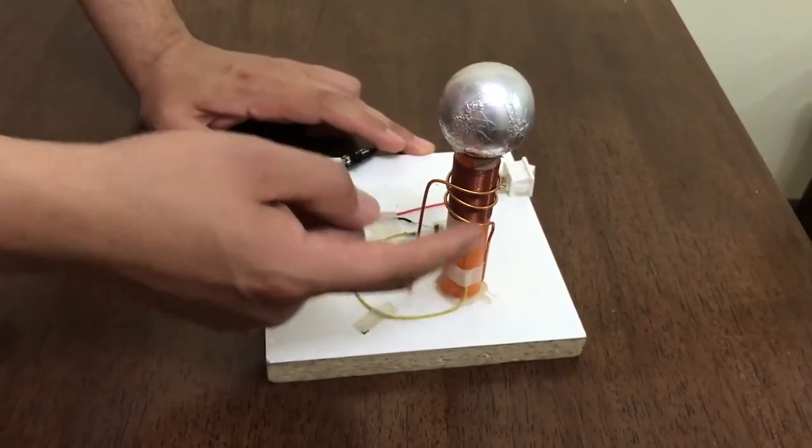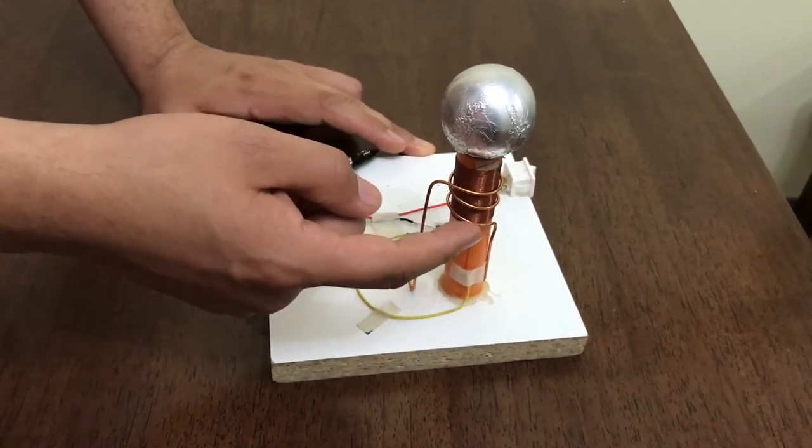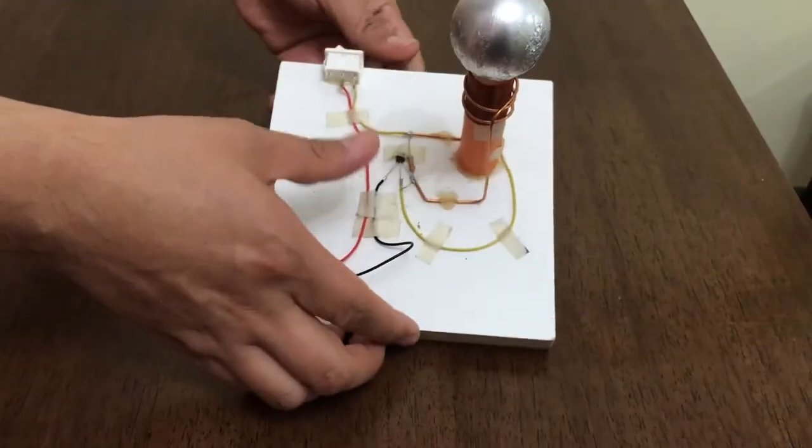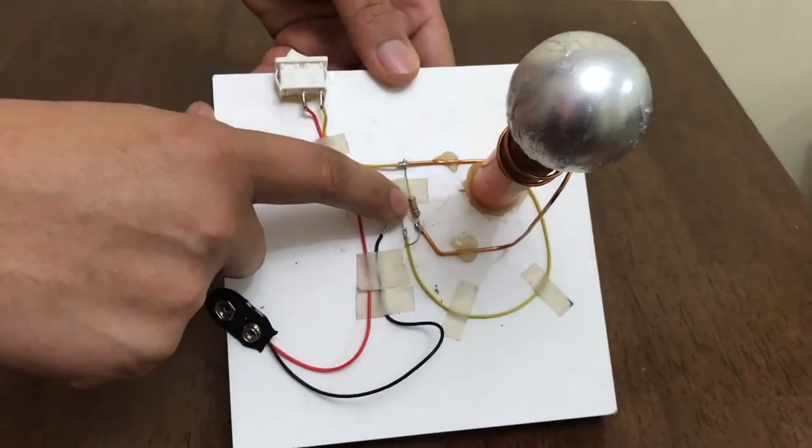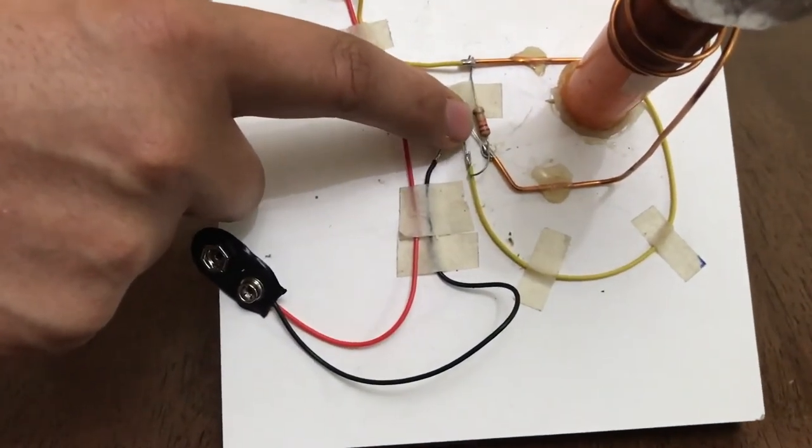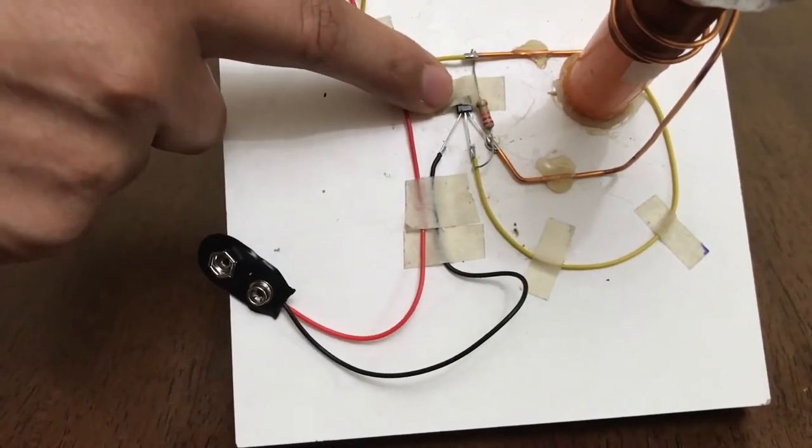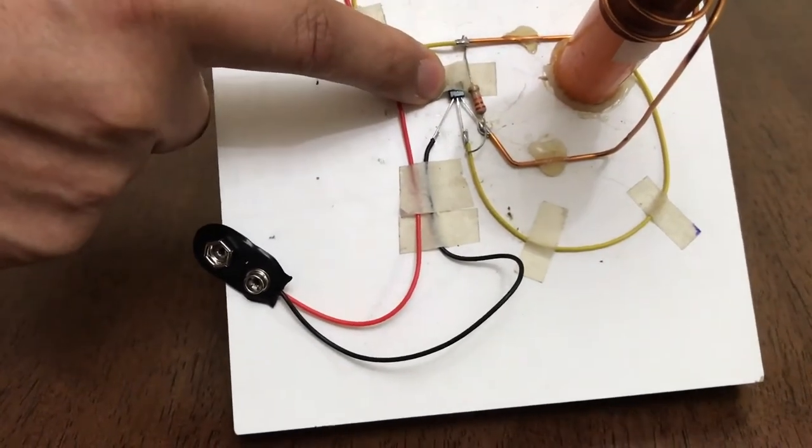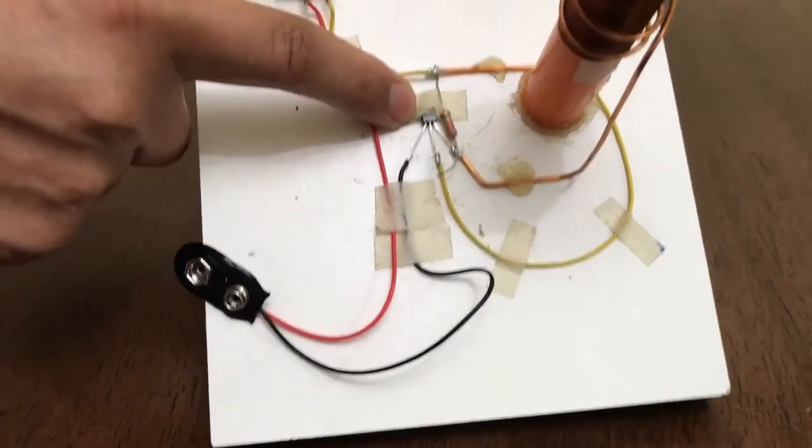Un tubo de PVC. Alambre de cobre con dos diferentes diámetros. Y en esta sección de acá, ese corresponde a una resistencia que en el video ya está, voy a mostrar el detalle de cuánto es su valor. Y un transistor que también tiene un número particular y específico para que funcione este proyecto.